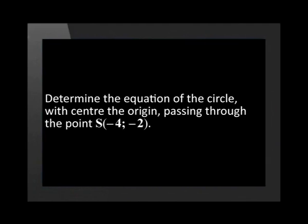That wasn't too difficult. Let's take a look at another example. Why don't you try this one before looking at the answer? Determine the equation of the circle with center the origin passing through the point (-4, -2). In this case, we have values for x and y. x is negative 4 and y is negative 2.